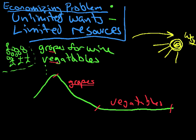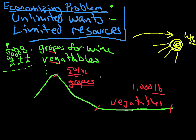What do you think the first thing they're going to do is? They're going to start planting grapes — but not down in the valley. This place is great for vegetables; you could produce 1,000 pounds of vegetables per acre down here. Up on the hill you could only produce 50 pounds of vegetables per acre. So they're going to produce all their vegetables down here and all their grapes on the hill. Makes sense, right?